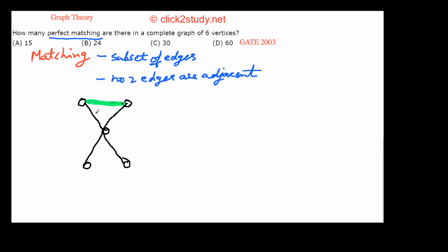Can we include an adjacent edge? No, because if you include that edge the two will become adjacent, violating the condition. But we can choose a non-adjacent edge. So a matching can have this edge and this edge — they are a subset of the graph's edges and they are not adjacent.